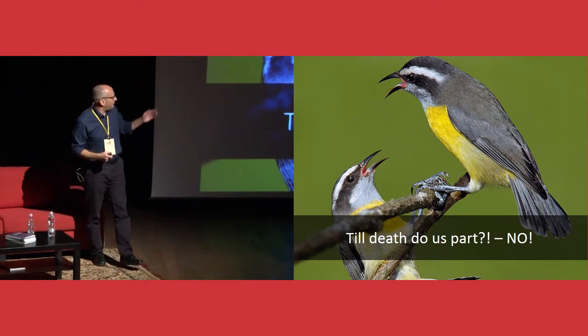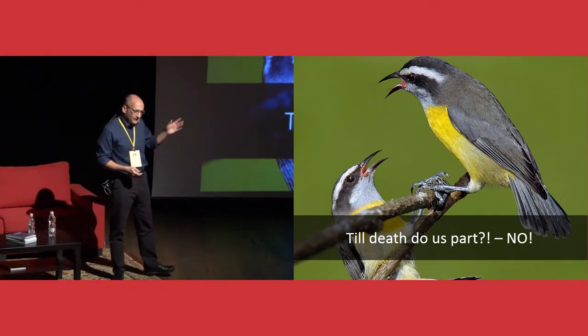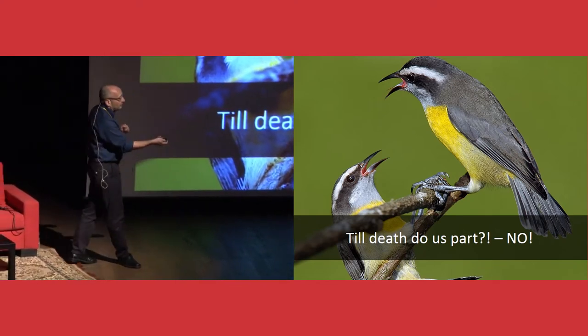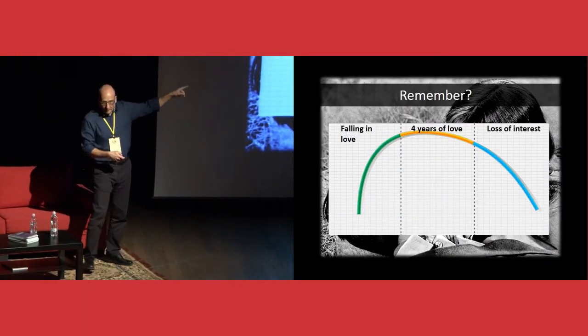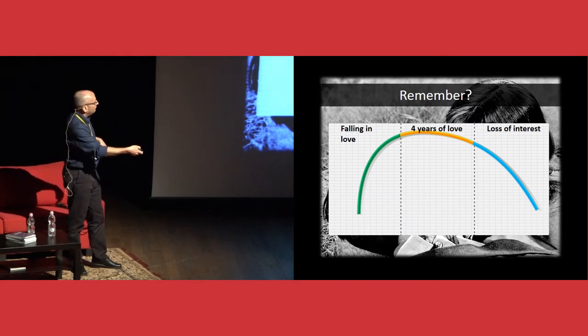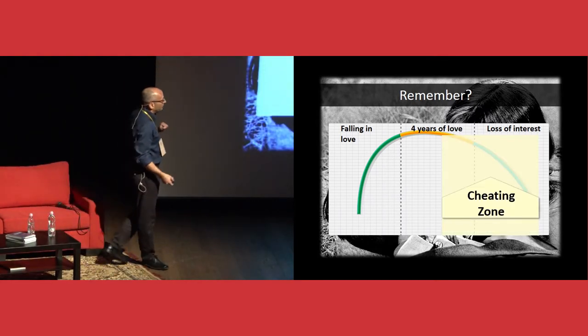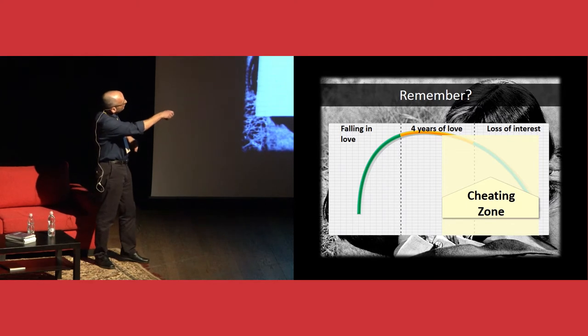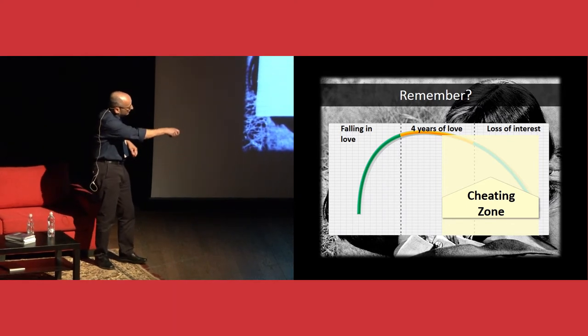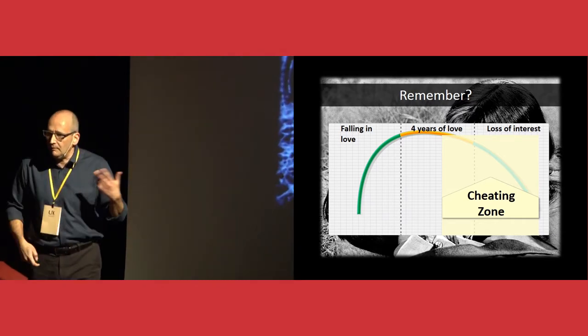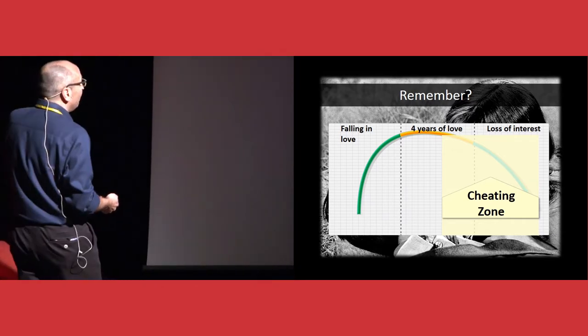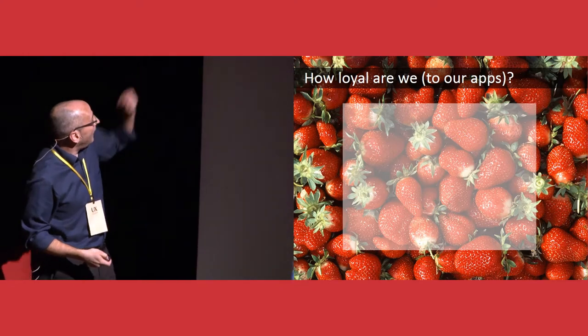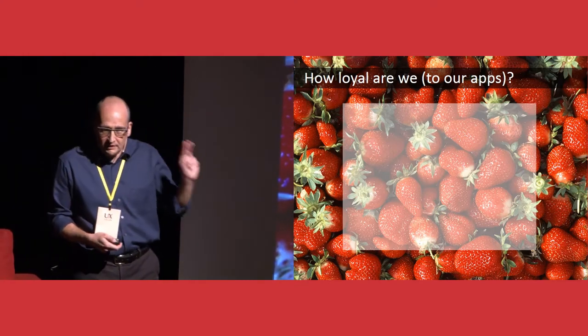There's a good term, till death do us part. But basically, unfortunately, this is what happens. This is the cheating zone. Typically, people will tend on cheating on this area. Because of the loss of interest. Let's have a look at the numbers. How loyal are we to our apps?